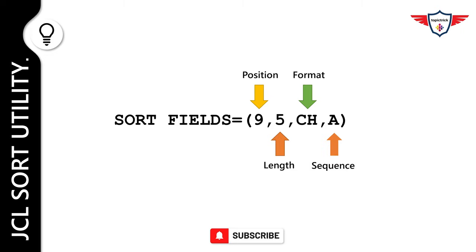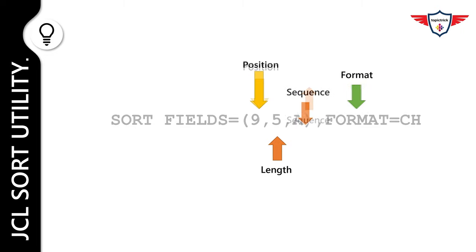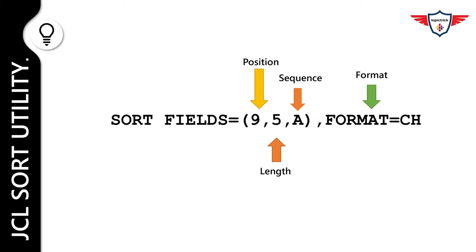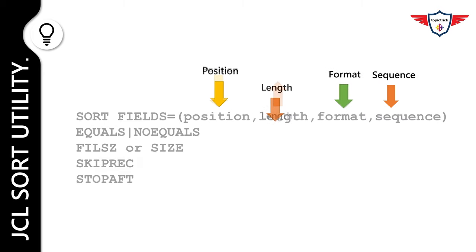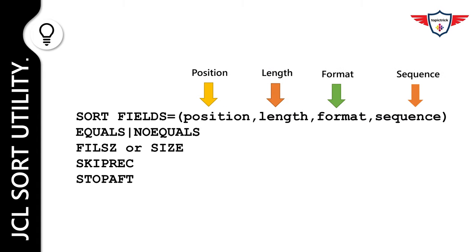Now let's look at a different variant of the sort control statement. In this variant, the format of data is specified separately. Before closing today's JCL tutorial, let me summarize the JCL sort syntax with a few additional parameters. Here is the precise version of the JCL sort syntax.